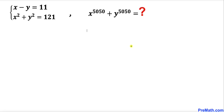Welcome to pre-math. In this video we have got this system of equations: x minus y equals 11, and x squared plus y squared equals 121. Now we are going to find the value of x to the power 5050 plus y to the power 5050.